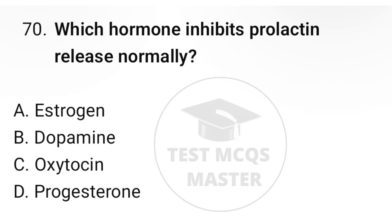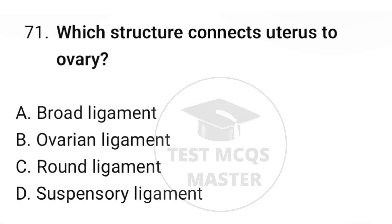Question number seventy: which hormone inhibits prolactin release normally? The correct option is B, dopamine. Question number seventy-one: which structure connects the uterus to the ovary? The correct option is B, ovarian ligament.